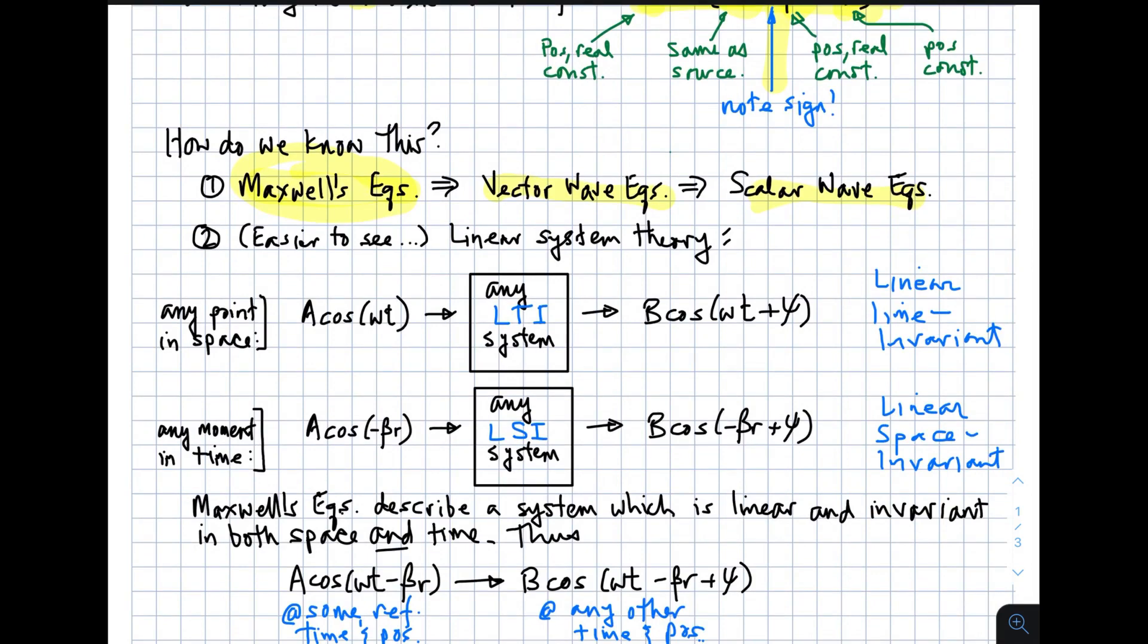There's an easier way to see that this is going to be true, and it depends only on you believing that Maxwell's equations describe a linear system. From linear system theory perspective, our time domain input A cosine omega t, at any point in space, we have a linear time invariant system. LTI means linear time invariant system. The only thing a linear time invariant system can do to a sinusoid is change its magnitude and change its phase. It may not change its frequency. So the only thing an LTI system can do is change magnitude and phase.